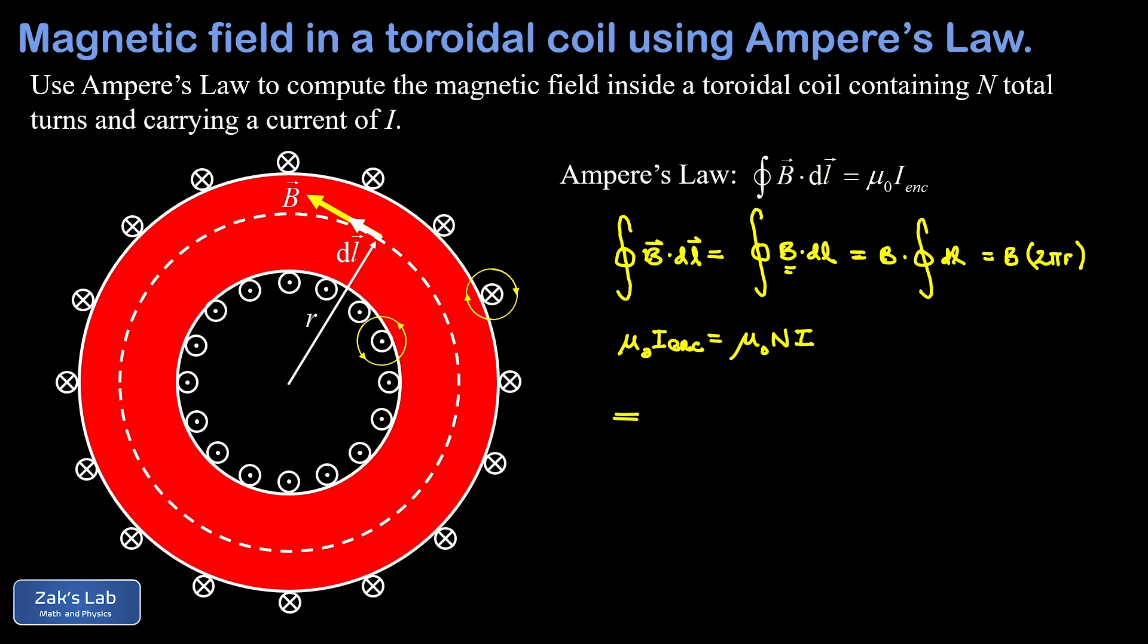Now we can put it all together. On the left-hand side we had B times 2πr, and on the right-hand side we have μ₀ times capital N, the total number of turns in the toroidal coil, times I, the current carried by that wire. All we have to do is divide by 2πr, and so we arrive at the final answer for the magnetic field inside the toroid itself, and that's μ₀NI over 2πr.